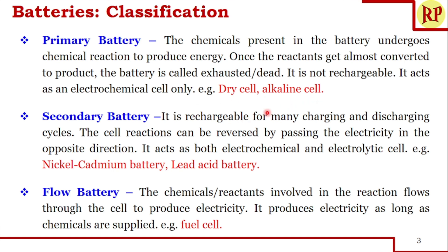In a secondary battery, it can be recharged for many charging and discharging cycles. The cell reactions can be reversed by passing electricity in the opposite direction, so it can act both as an electrochemical cell and an electrolytic cell. Examples are nickel-cadmium battery and lead-acid battery.